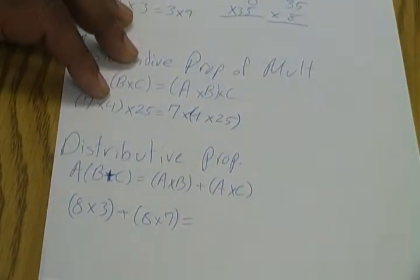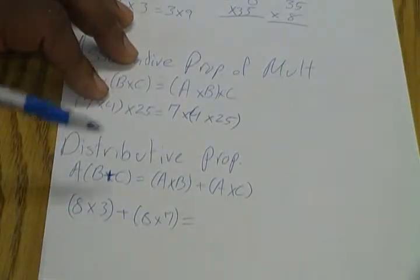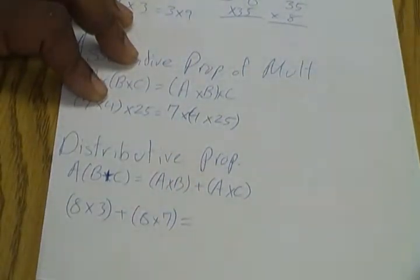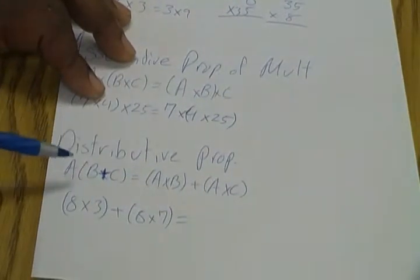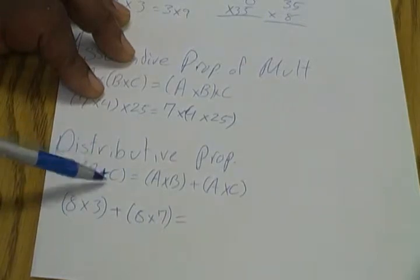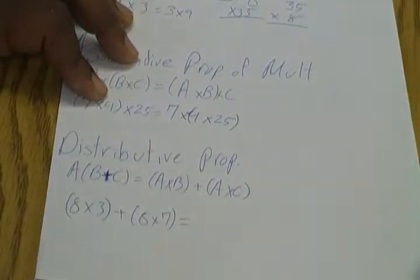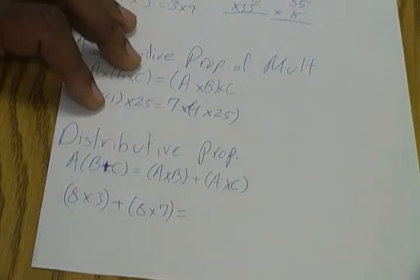Now going on to the distributive property. The distributive property is actually not just multiplication, it's actually multiplication and addition together. So what this says here is A, and then in parentheses B plus C, is the same thing as A times B plus A times C.